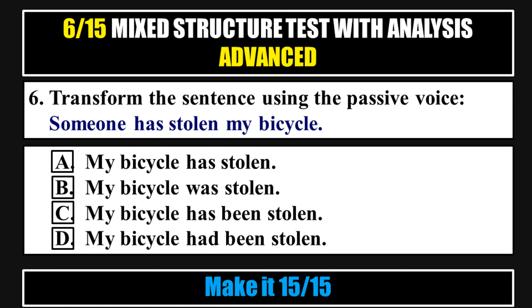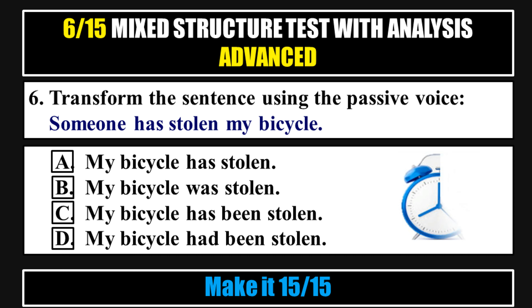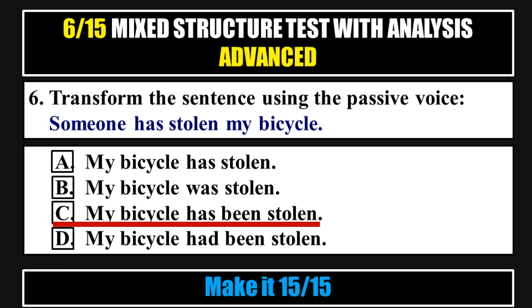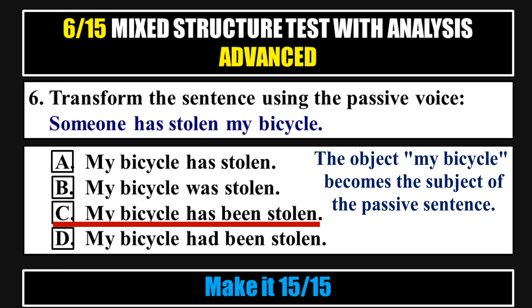Question 6. Transform the sentence using the passive voice: 'Someone has stolen my bicycle.' Options: a. My bicycle has stolen. b. My bicycle was stolen. c. My bicycle has been stolen. d. My bicycle had been stolen. Answer C: My bicycle has been stolen. Analysis: The object 'my bicycle' becomes the subject of the passive sentence.